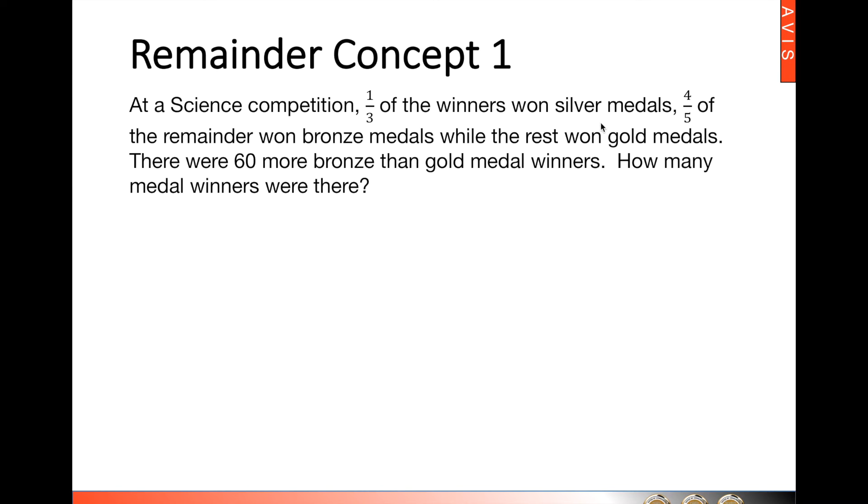Now one third of the winners was silver medal winners. So we're going to draw a branch to show silver medal winners and that is one third. Now of course the other side is going to be the remainder which will be two thirds. Now it is always important to note that every branch must add up to be one whole. So silver medal winners one third, the remainder would be two thirds.